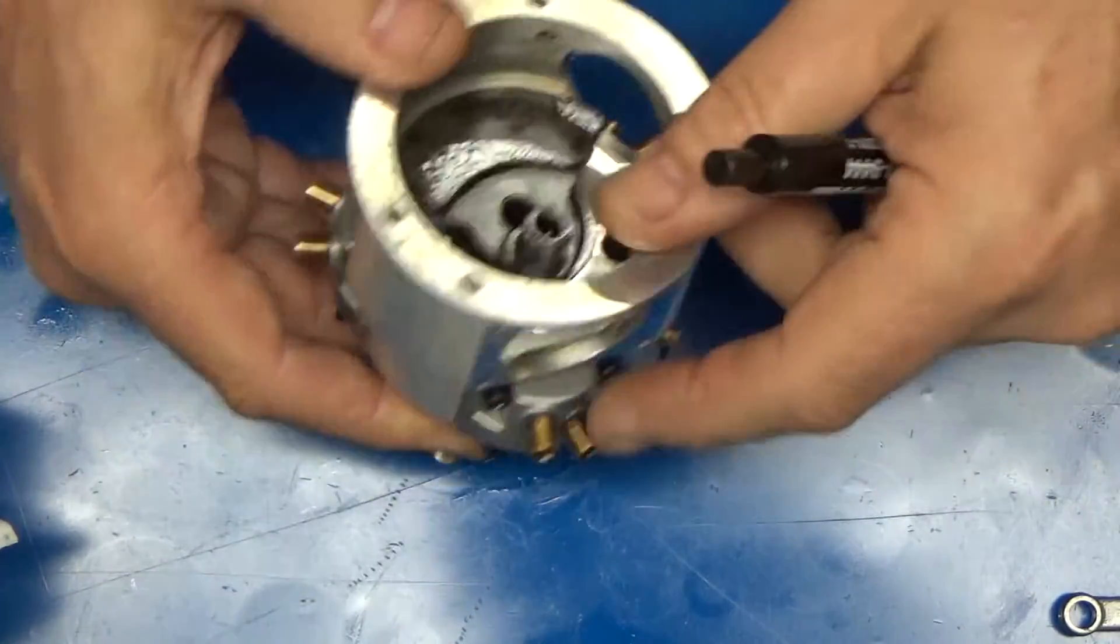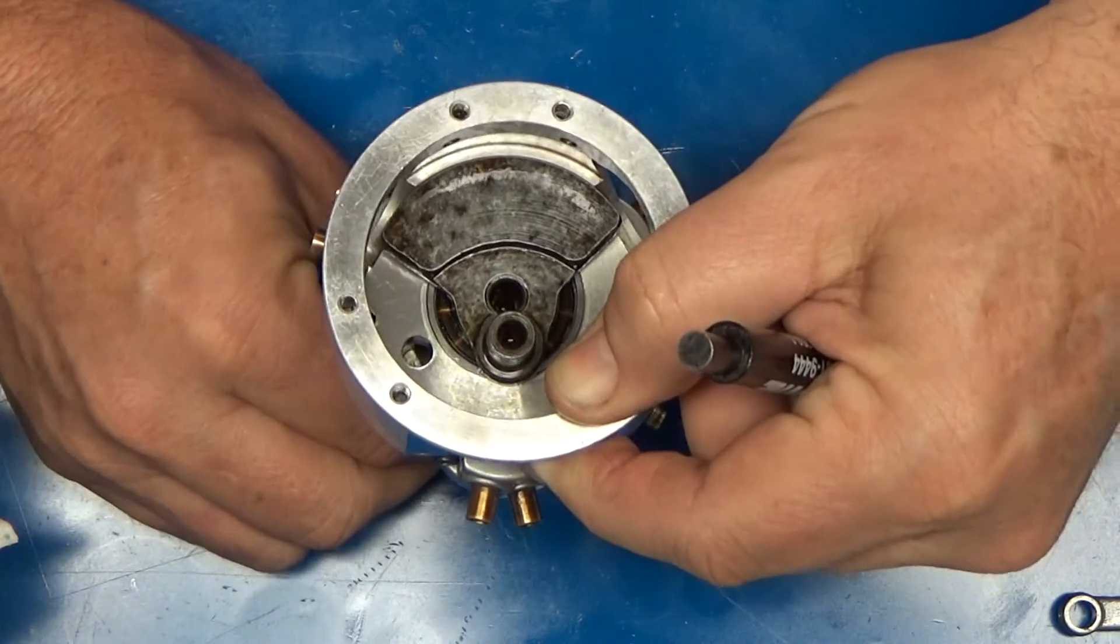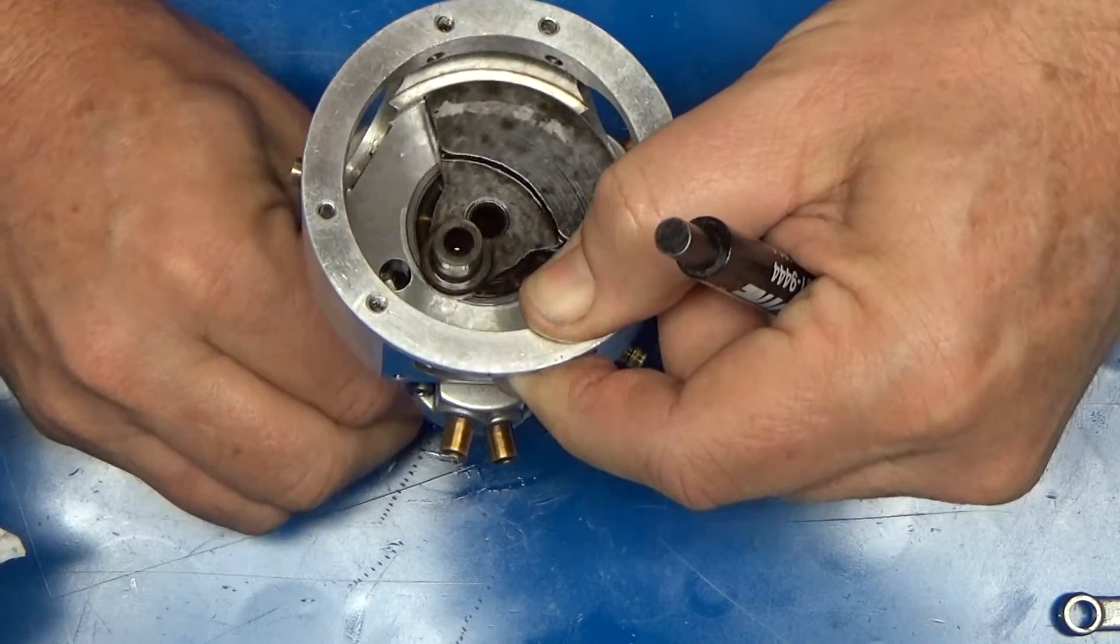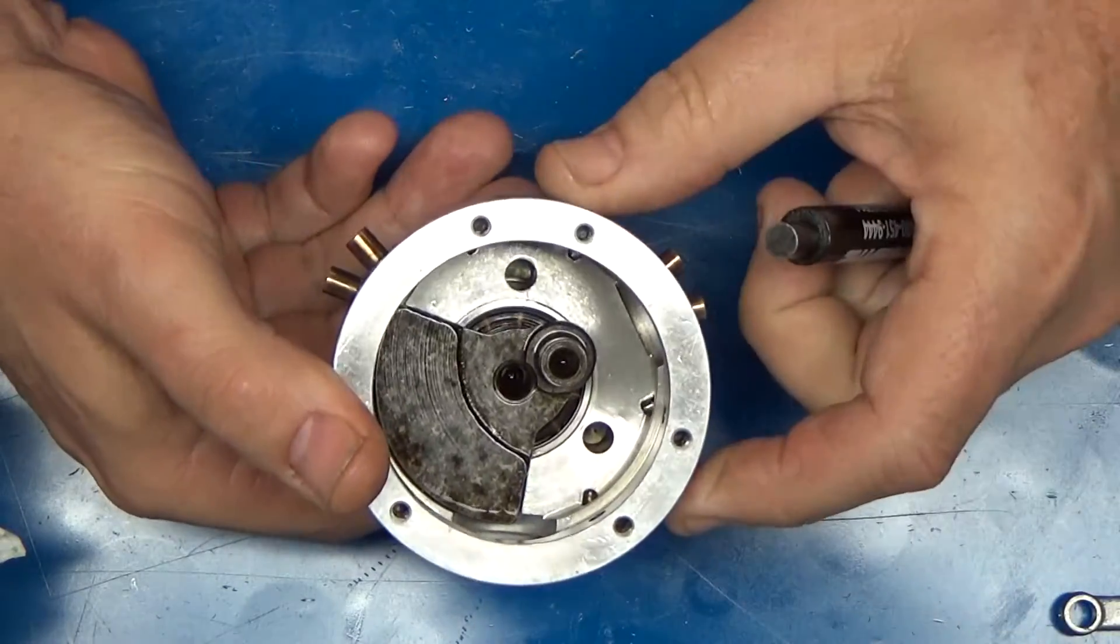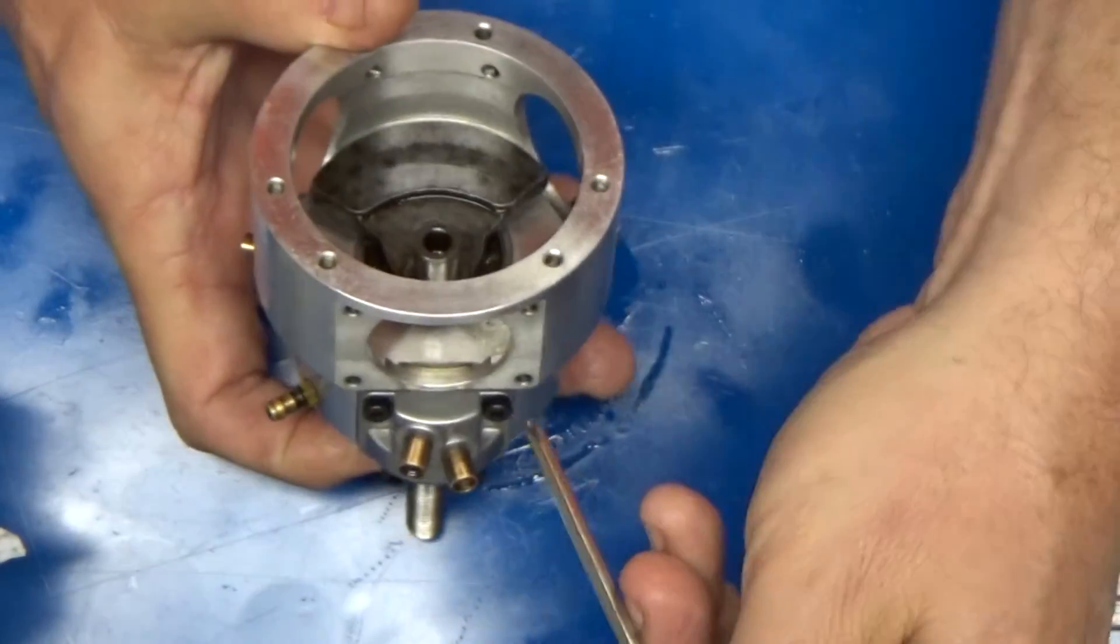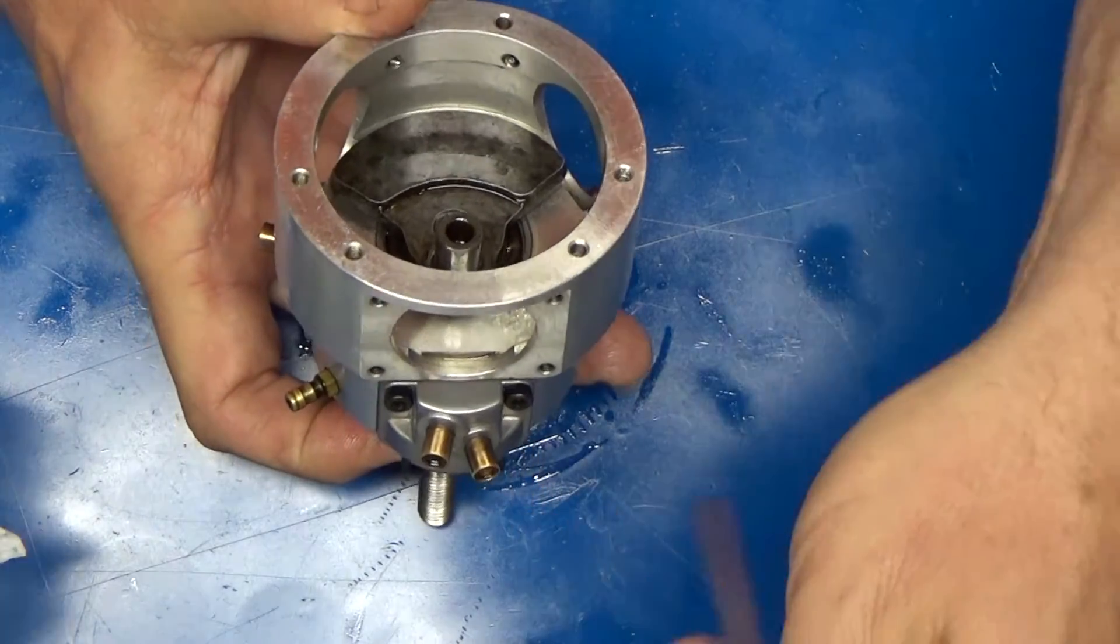So now if I want to time two, after I've got this one in place, I go past one and then stop at two, and then I would insert my timing gear in here.